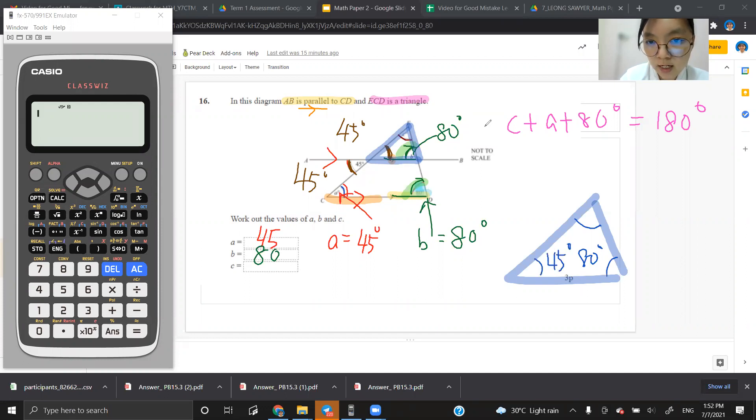So it says in a triangle, all the total interior angles, C plus 80 plus 45 equals 180. So I'm able to work out what is my C then. So I put this down.